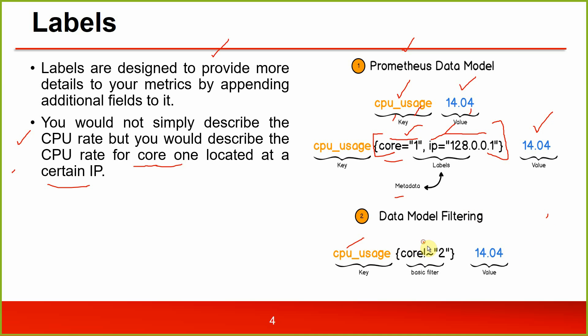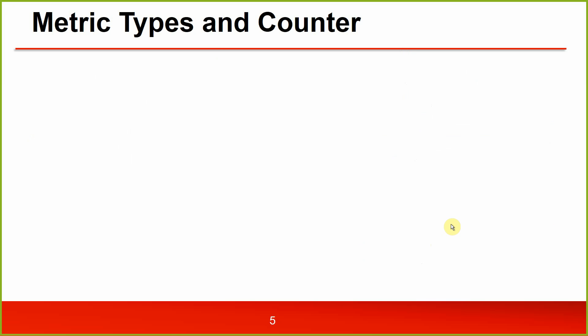You can do filtering on these labels using expressions — for example, where the core is not equal to two, or not containing two, to display all the metrics. This is how labels are used to filter metric values.